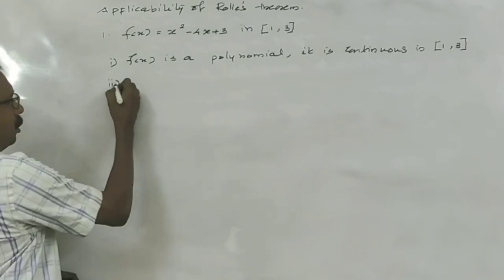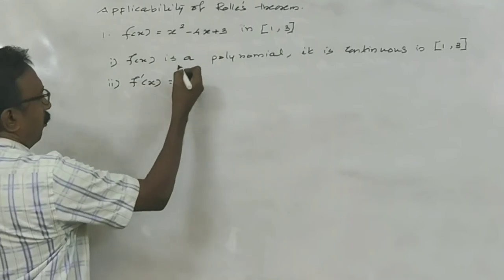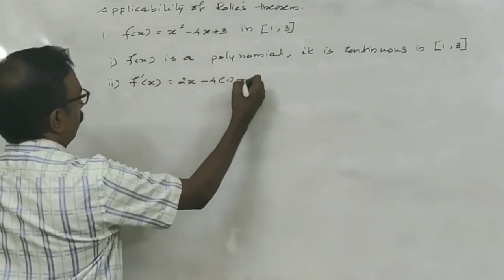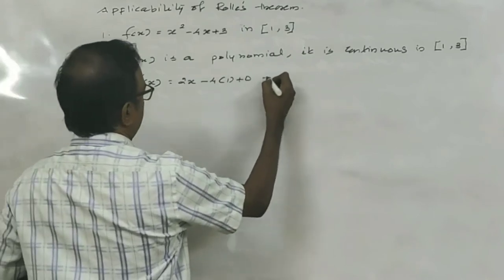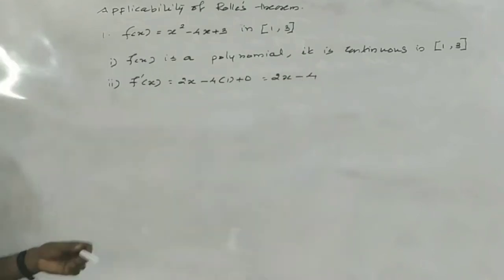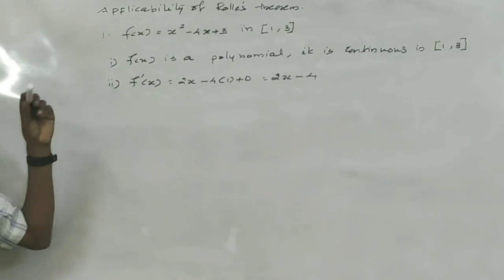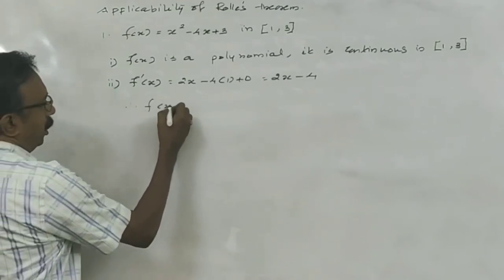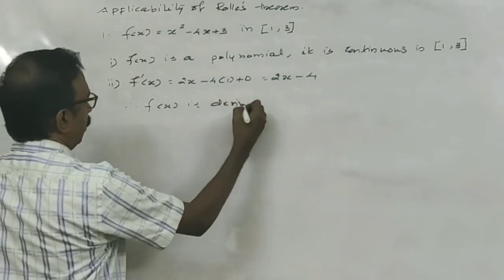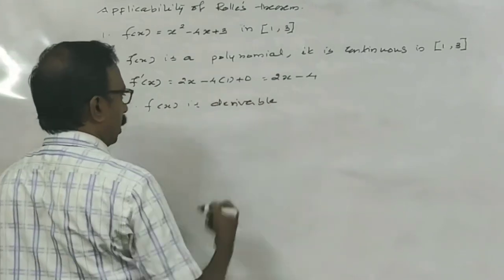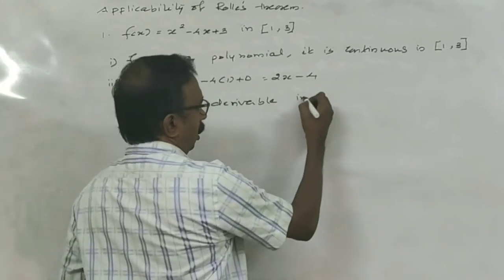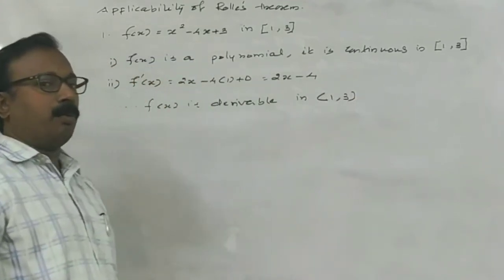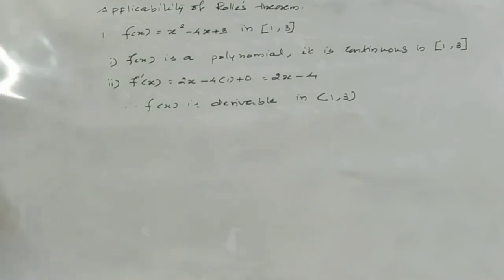For the second condition, we find F dash X. Here F dash X is 2X minus 4. We can find the derivative of this function. Therefore F of X is derivable in the open interval 1 to 3.